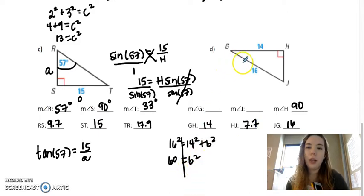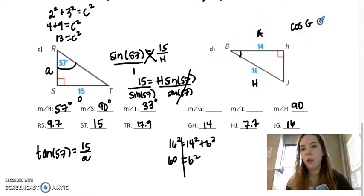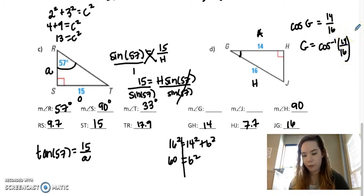Now I can find an angle. Let's say we want to use G. This side is adjacent to G. This is the hypotenuse. So I'm going to want to use cosine. Cosine of G equals 14 over 16, which makes G the inverse of cosine of this ratio, 14 over 16. Or 29.0 when it's rounded. So then 90 minus 29 is 61 degrees.